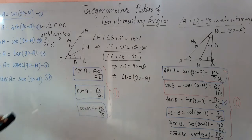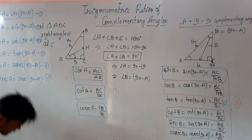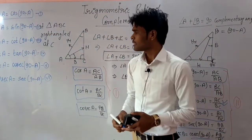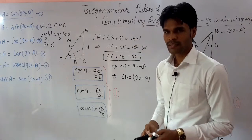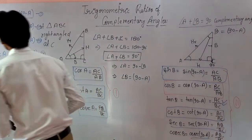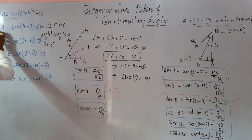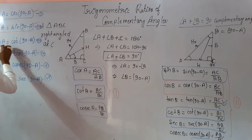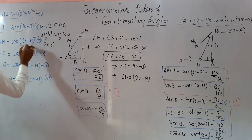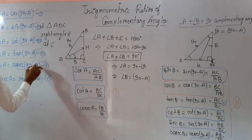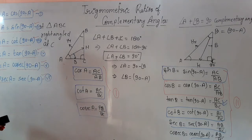The complete revision: sin A = cos(90°−A), cos A = sin(90°−A), tan A = cot(90°−A), cot A = tan(90°−A), sec A = cosec(90°−A), cosec A = sec(90°−A). This is the formula you have to keep in mind for Exercise 8.3.